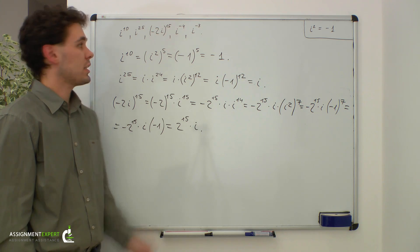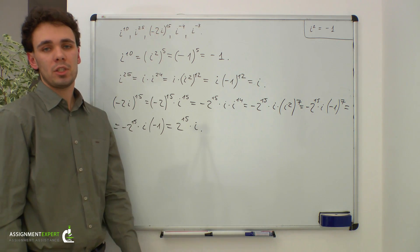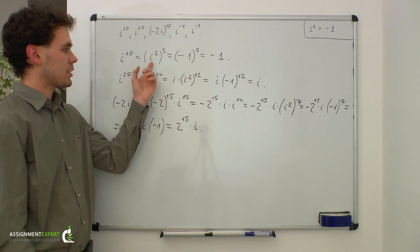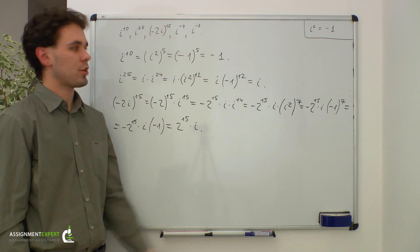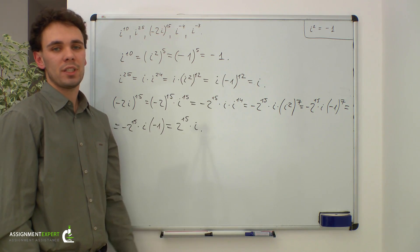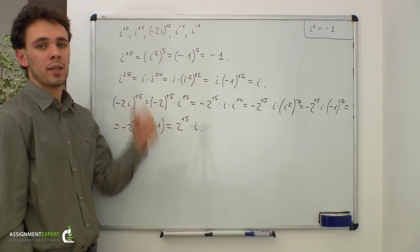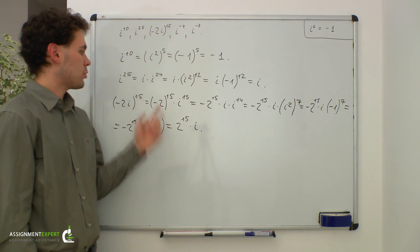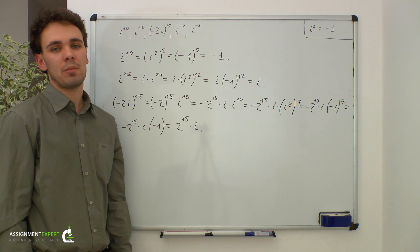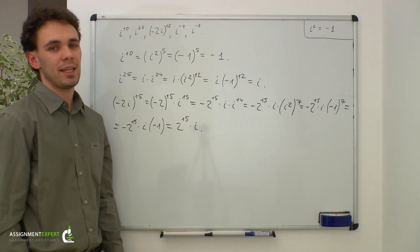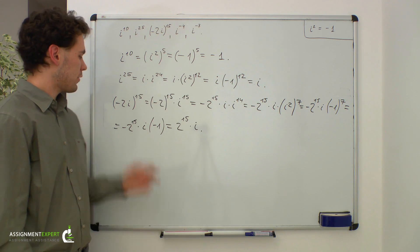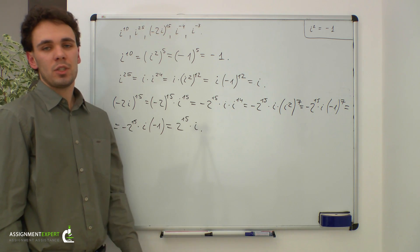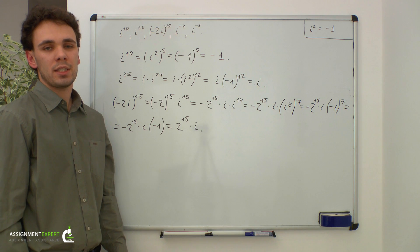Summing up: when we are dealing with an even power of i we need to represent the expression as i squared raised to a certain power. As a result we get either 1 or negative 1. When we are dealing with odd power of i we need first to separate one i in order to get i times i raised to the even power, and then we use the same approach as for even powers. When we are dealing with powers of imaginary numbers we need to factor out real multipliers and then we act pretty much the same as above.